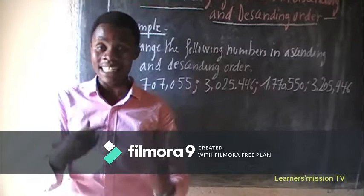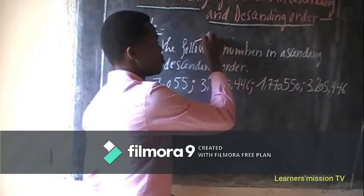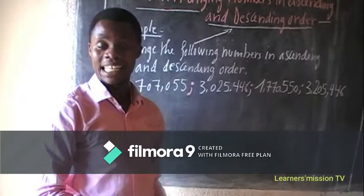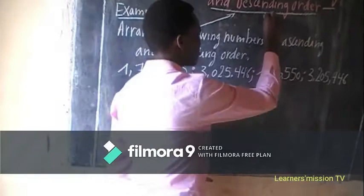Learners, don't get confused about those terms. I am telling you that ascending is arranging numbers from the smallest to the highest, while descending order is arranging numbers from the highest to the lowest.